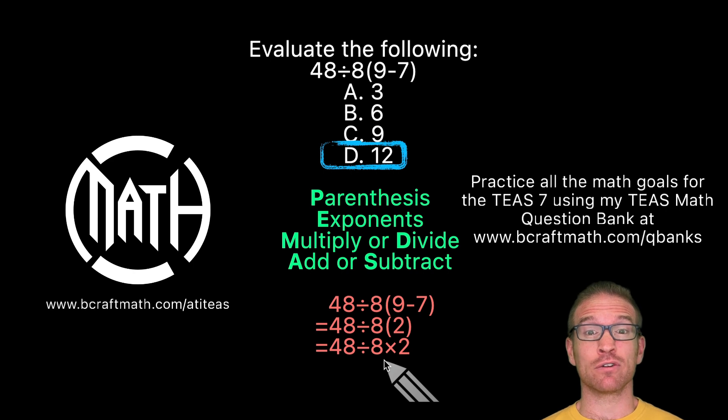Now back to here, had you multiplied first, eight times two, that would give you 16. And if you take 48 divided by 16, that's where you're getting three. But again, that's incorrect.